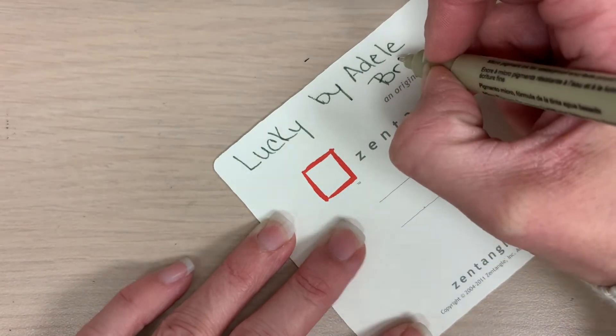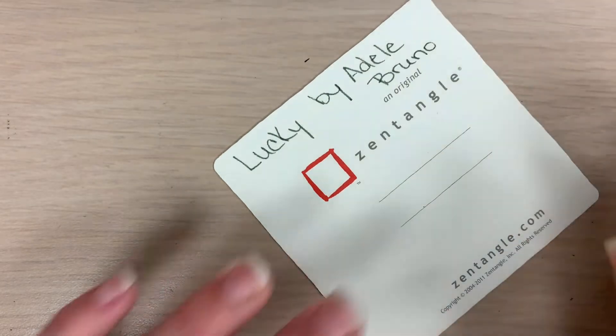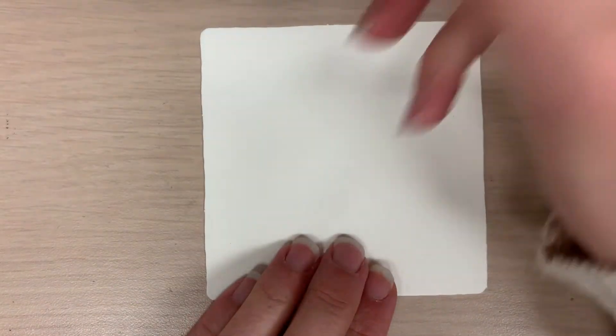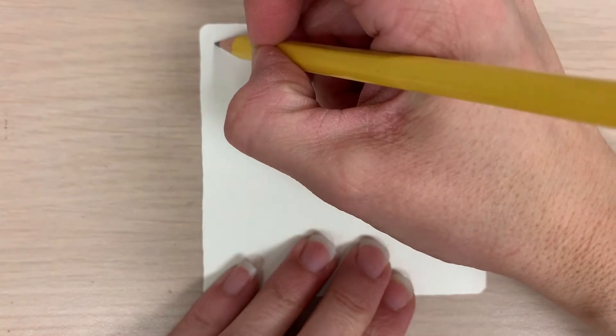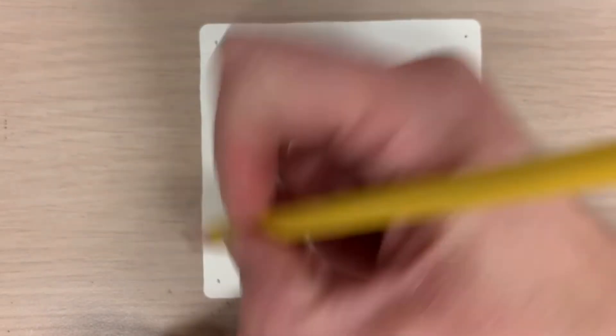So the first thing we're going to do is start with our pencil and I'm going to start in the traditional fashion with four corner dots and I'm going to connect these dots.